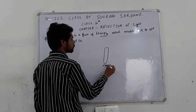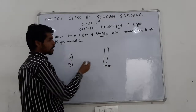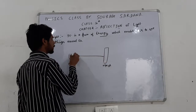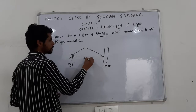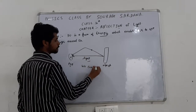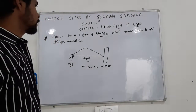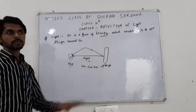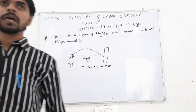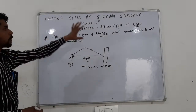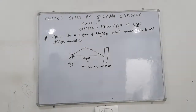This is an object — we are going to see it. So, light is a form of energy which helps us to see things around us. This was all about light.